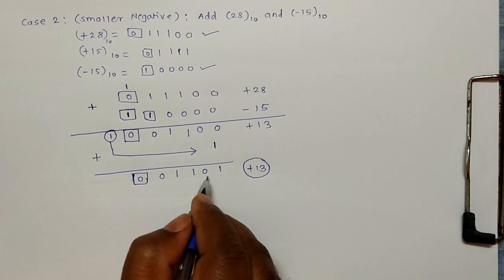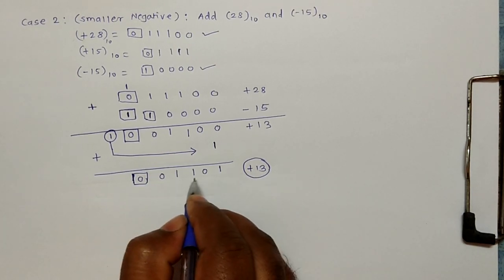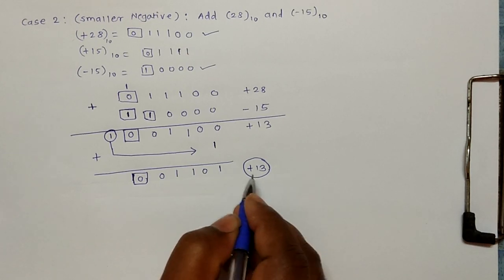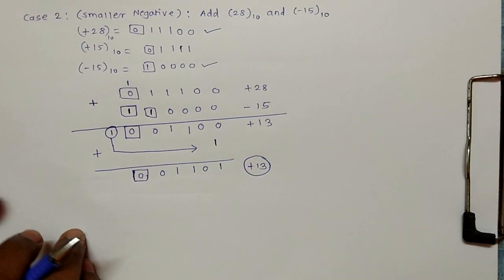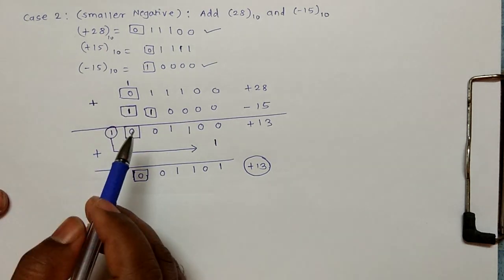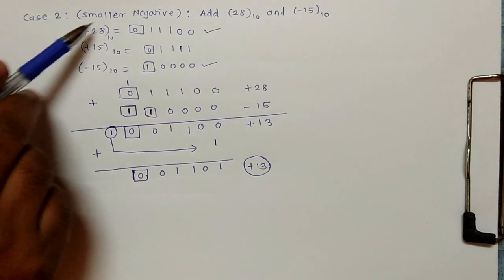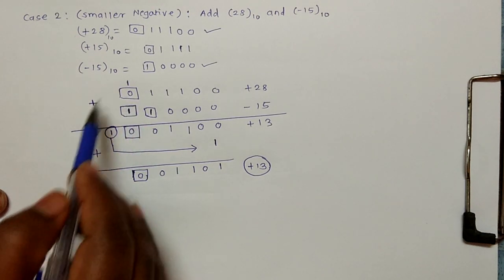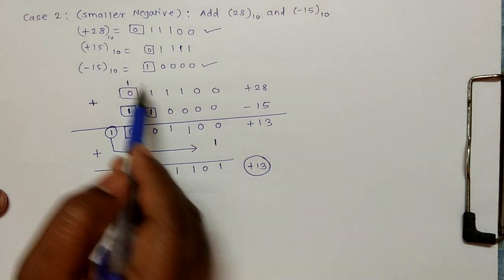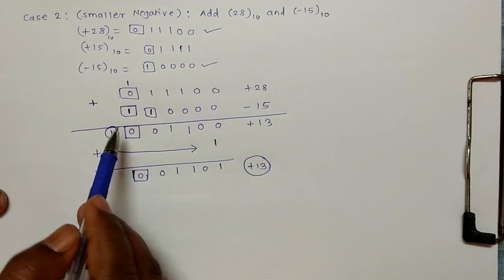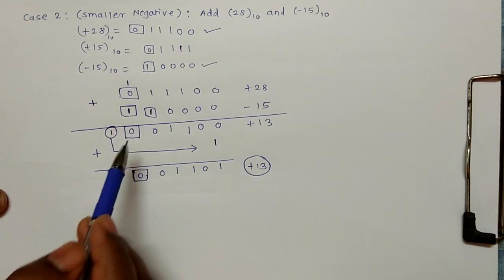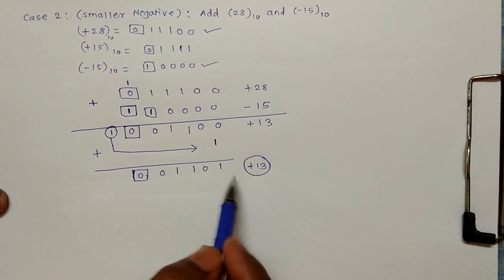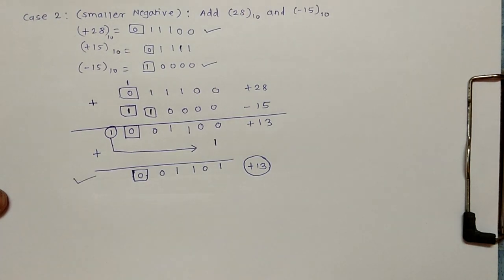The sign bit is zero, so the result is positive. The magnitude is eight plus four plus one, which equals thirteen — so the result is plus thirteen. This completes Case 2, where the smaller number was negative. We represented the negative number in one's complement form, performed the addition, and added back the carry. Thanks for watching the video.